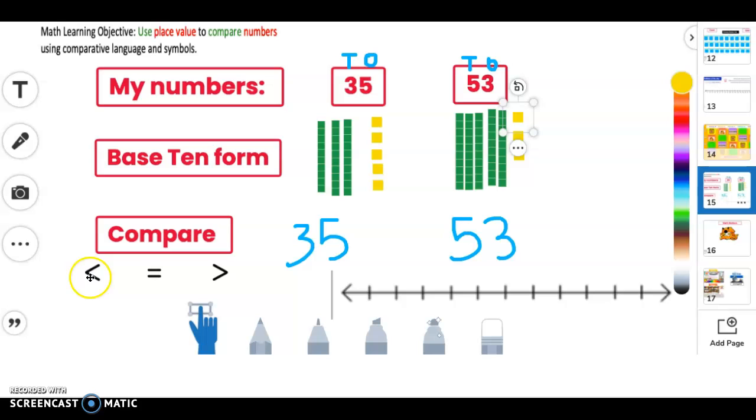So let me get my hand and I'm going to get the symbol that says 35 is less than 53. If you notice, the bigger side opens up to the bigger number and the small side always goes towards the small number.